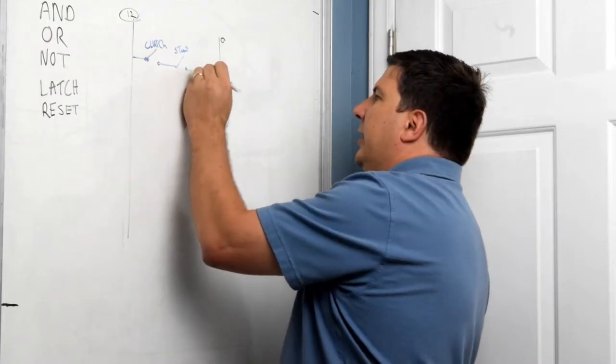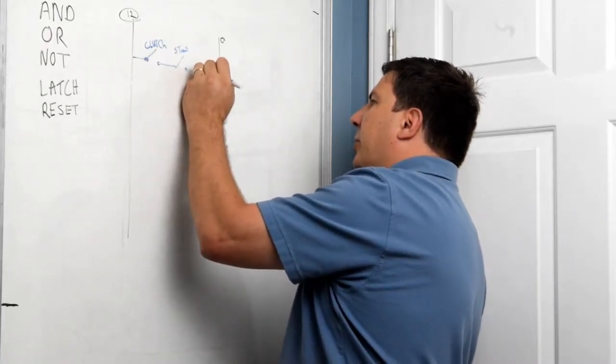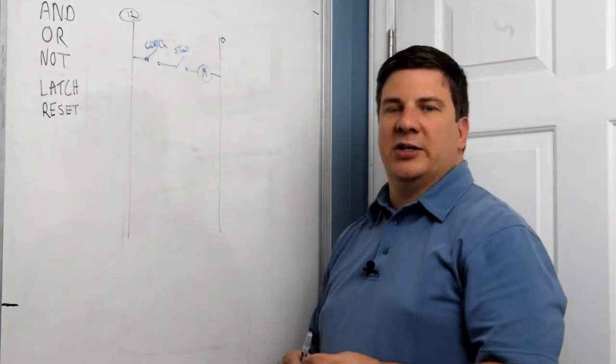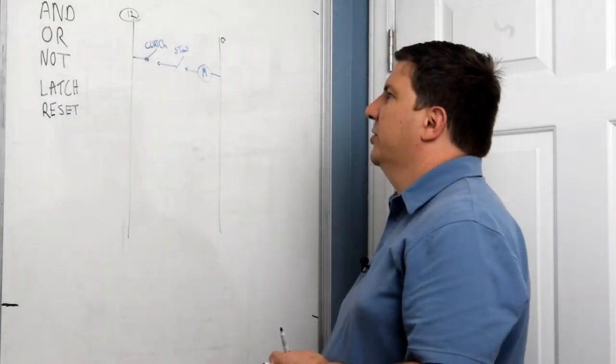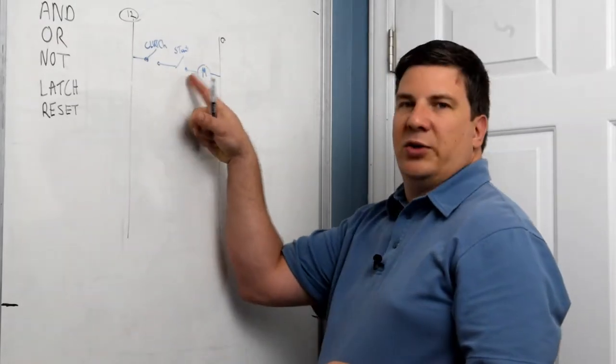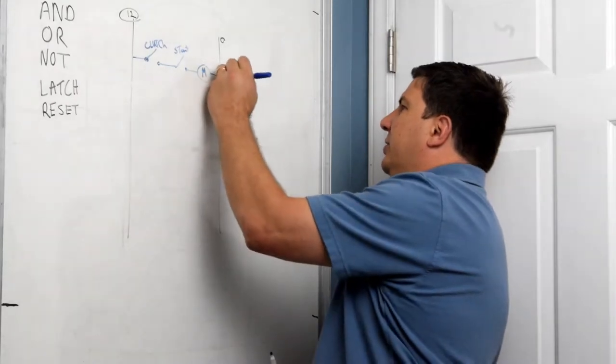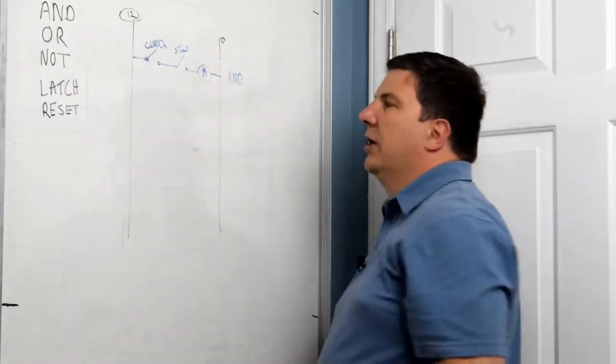This engages the clutch while we do the start. And then I'm going to have it turn on a motor. Now, chances are there's going to be a relay in there or a starter coil just to make sure that we're not pulling too much current through here. But for this, I just want to give a good, clean example of an AND function.